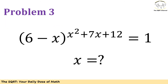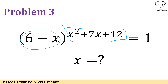Now let's move to the third problem. We have (6 minus x) to the power of (x squared plus 7x plus 12) equals 1, and we are going to find x. Make sure that you pause the video to think about this problem and we will see you in about 15 seconds.